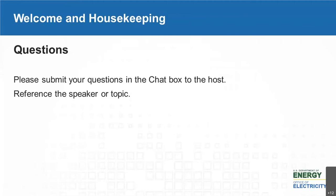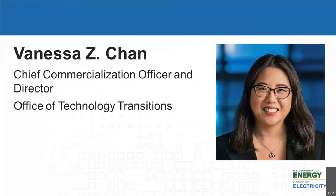To get us started today, please welcome Vanessa Chan, Chief Commercialization Officer and Director of the Office of Technology Transitions at DOE. Thanks for joining us today for this third installment in the Department of Energy's wildfire webinar series. If you tuned into parts one and two, you've heard from Pat Hoffman and Michael Pezzin in the Office of Electricity, as well as a host of our experts on some of the technologies and tools the department can bring to bear on the challenges posed by wildfires.